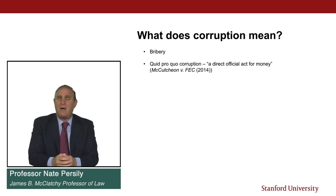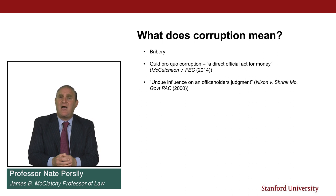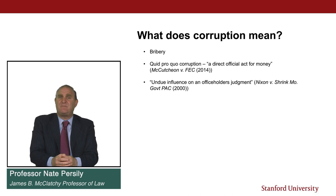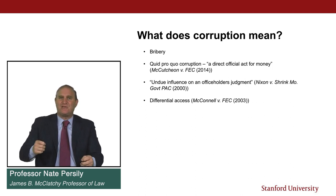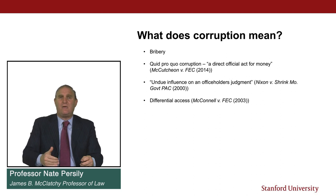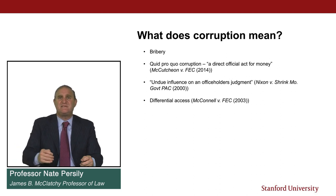There are other notions of corruption that have come up in the campaign finance case law, even if they've been sidelined in recent years. The idea of undue influence on an officeholder's judgment — it might not be that there's direct money for policy being purchased, but just the fact that you give money to an officeholder might create undue influence on that officeholder's judgment. Money also might not buy votes, but it might buy access. In McConnell v. FEC, the court said that was a sufficient definition of corruption — that money might not buy actual favors, but it might buy you a seat at the table. So you might restrict the amount of money that people can give because you don't want them to purchase a seat at the table.